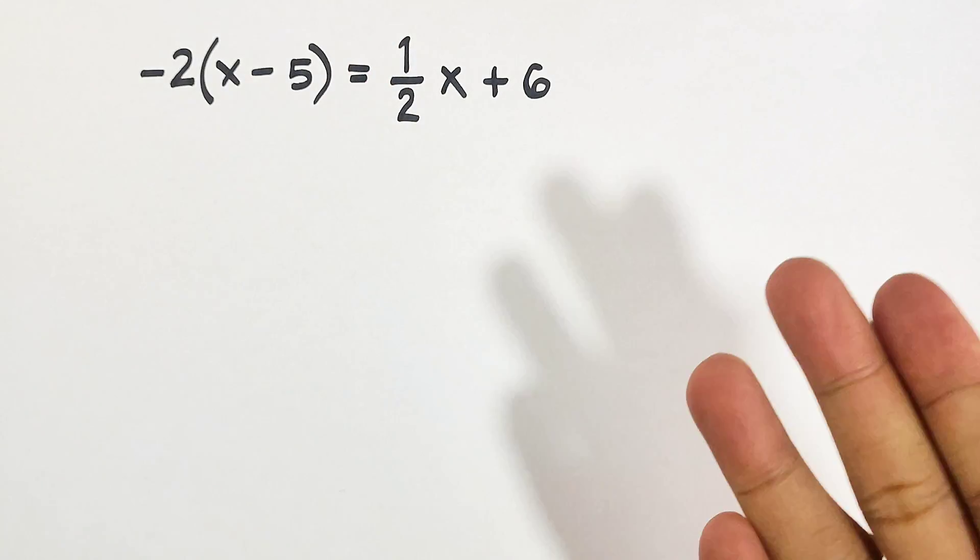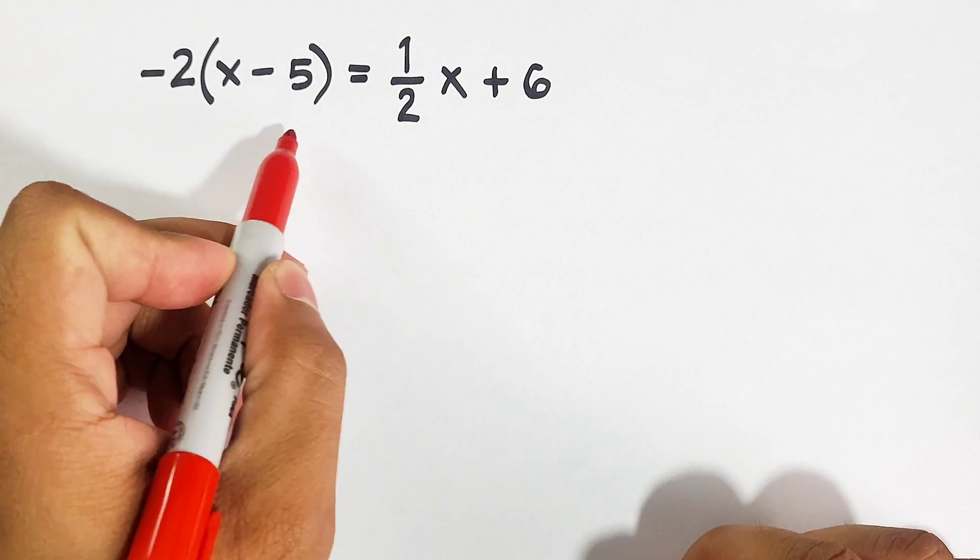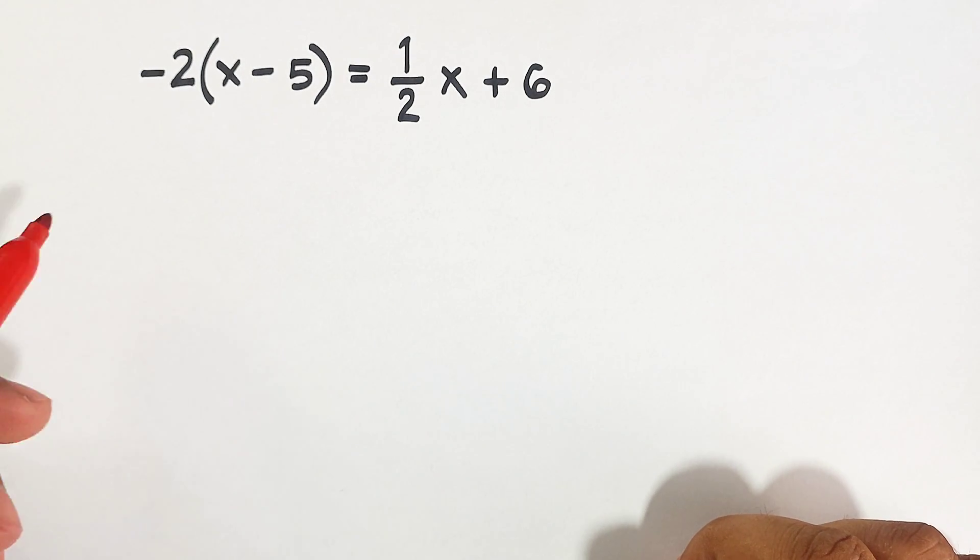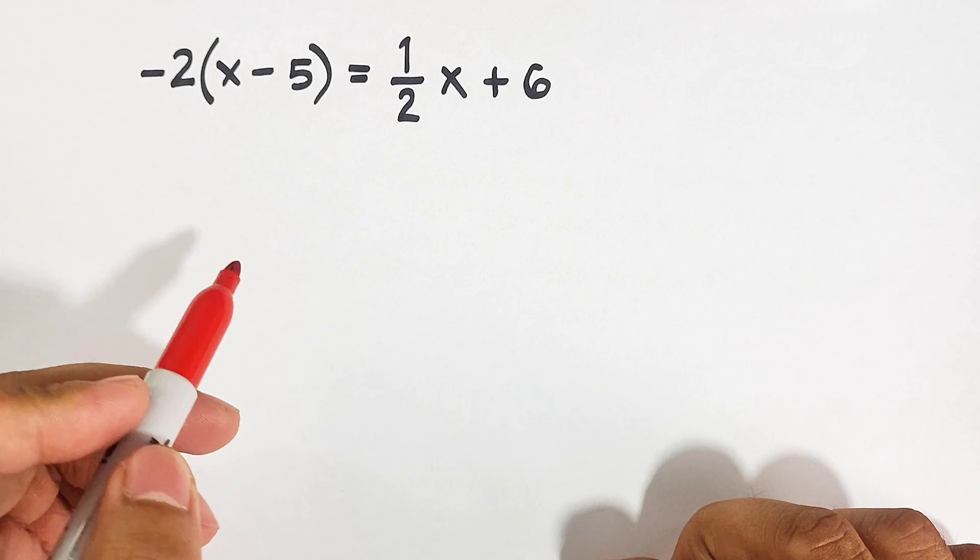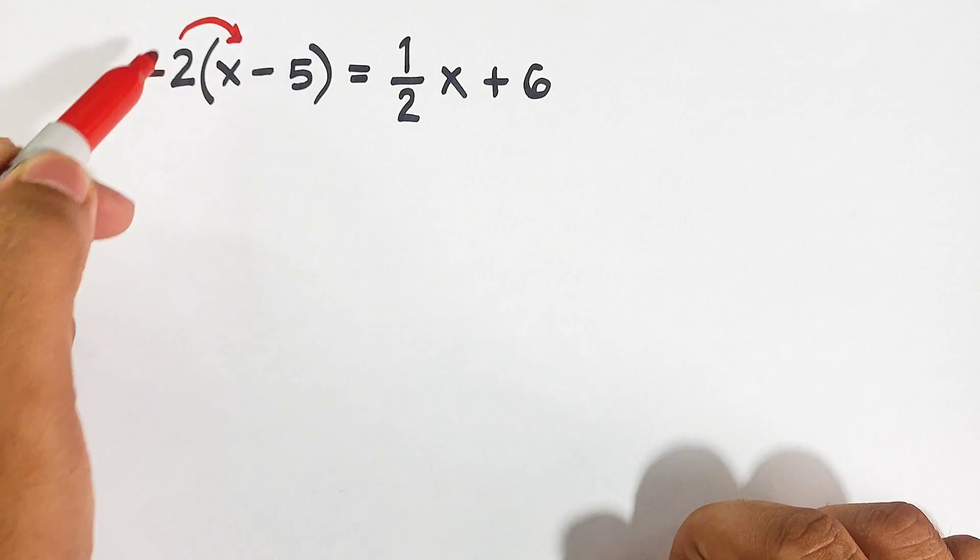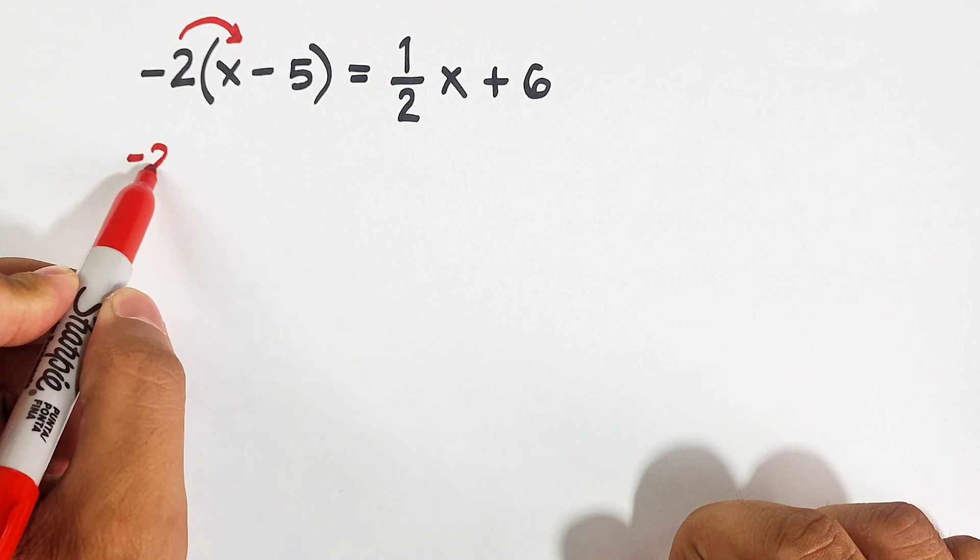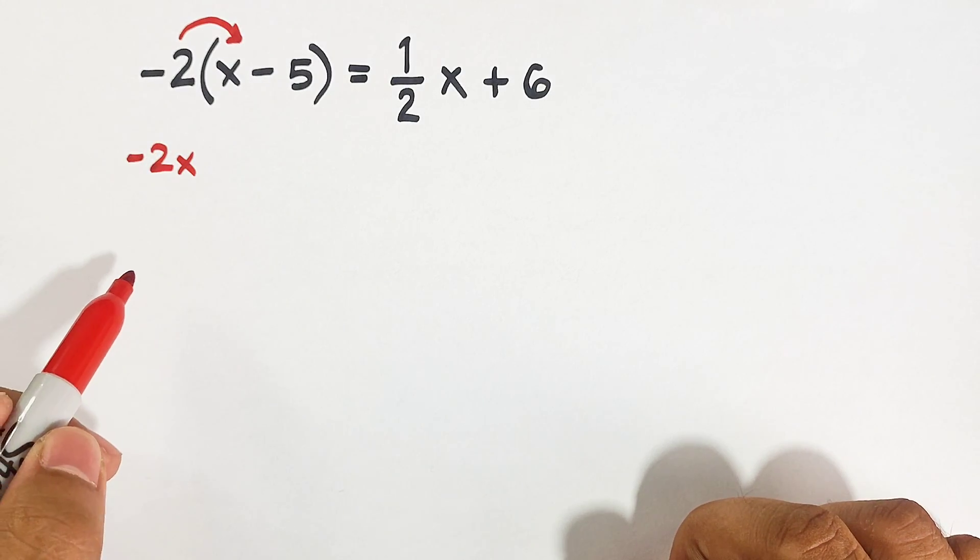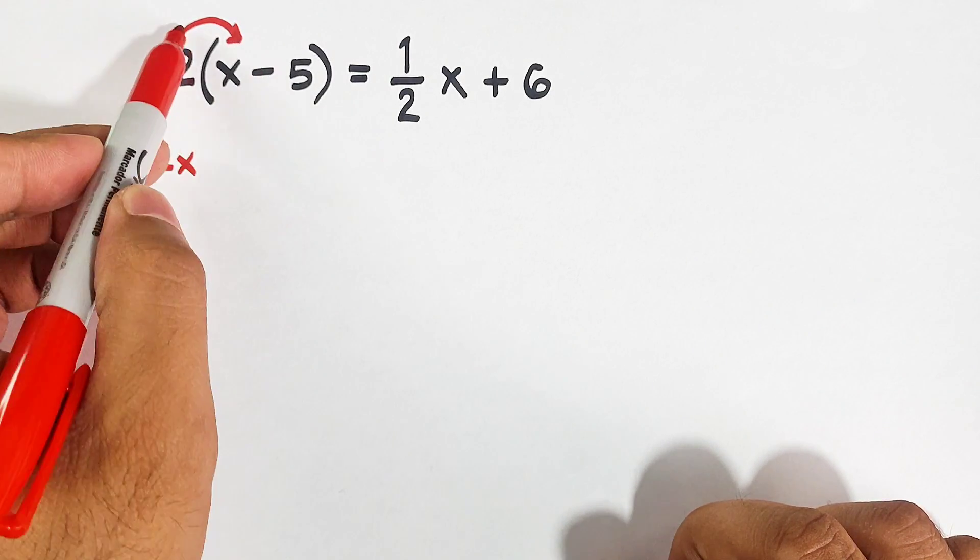First thing you need to do is simplify this parenthesis. We need to use the distributive property. So we have negative 2 times x, that is negative 2x.